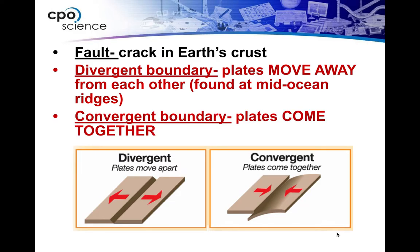Anytime we have a crack in Earth's crust, that is called a fault by definition. So along these plate boundaries we can call those faults. Now, if at the plate boundary the plates move away from each other, those are called divergent plate boundaries.